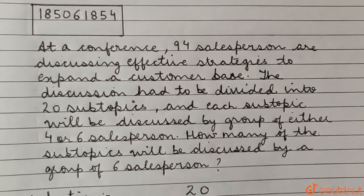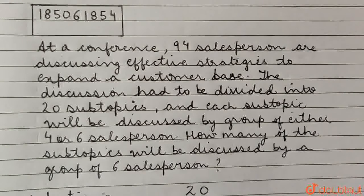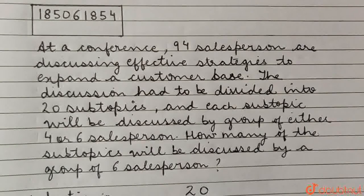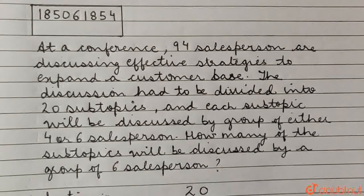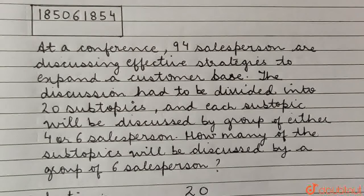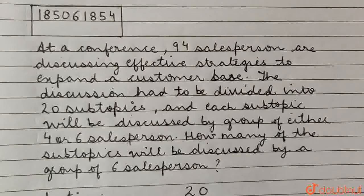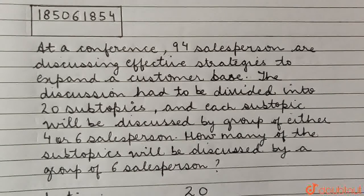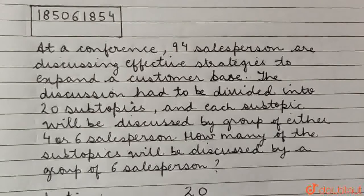At a conference, 94 salespersons are discussing effective strategies to expand a customer base. The discussion had to be divided into 20 sub-topics and each sub-topic will be discussed by a group of either 4 or 6 salespersons. How many of the sub-topics will be discussed by a group of 6 salespersons?